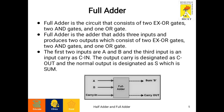The full adder adds three inputs and produces two outputs. The first two inputs are A and B, and the third input is carry-in C in. The output carry is designated as C out and the normal output is designated as S, which is the sum.